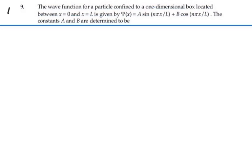Here's problem 41.9. The wave function for a particle confined to a one-dimensional box located between x equals 0 and x equals L is given by ψ(x) equals A sin(nπx/L) plus B cos(nπx/L). The constants A and B are determined to be: